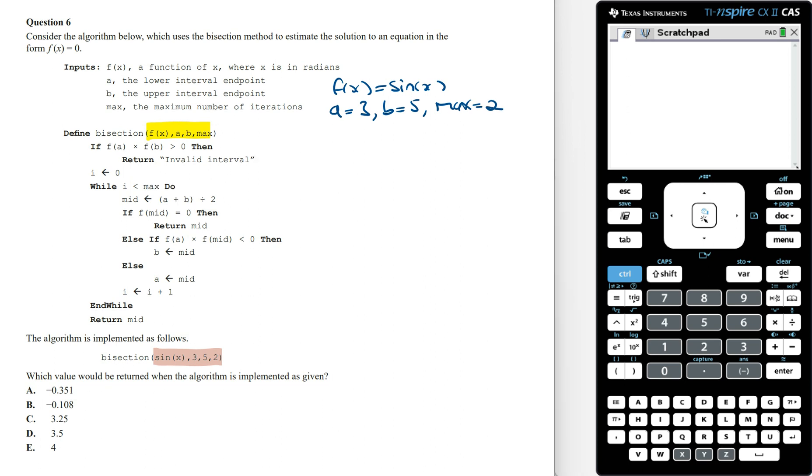Now following the steps, if f of a times f of b is larger than 0, then we don't do anything. So we want sin of 3 times sin of 5 to be larger than 0. Using the calculator, we can work out this value.